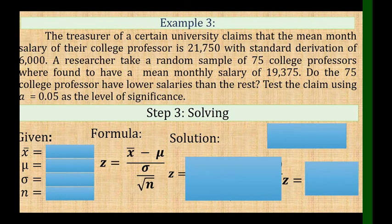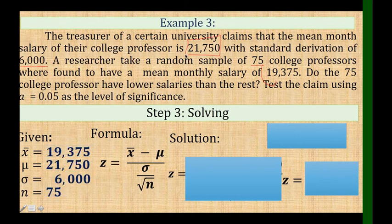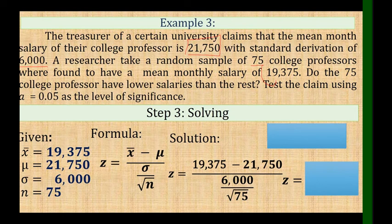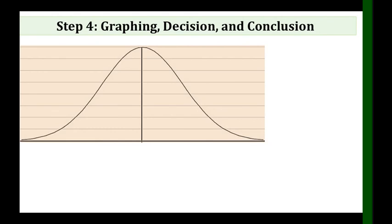For Step 3, identify the given values. n = 75 professors, sample mean = 19,375, sigma = 6,000, and population mean mu = 21,750. Put the values into the formula: Z equals (19,375 minus 21,750) over (6,000 over the square root of 75). The numerator is negative 2,375 and the denominator is 692.82. Dividing gives Z equals negative 3.43.